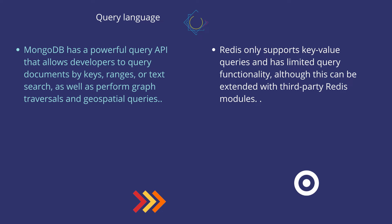MongoDB has a very powerful query API that allows developers to query documents by keys, ranges, or text search, as well as perform graph traversals and geospatial queries. However, Redis only supports key-value queries and has very limited query functionality, although this can be enhanced with third-party Redis modules.